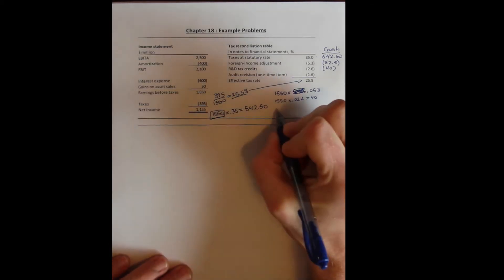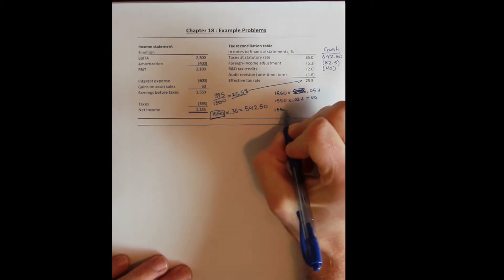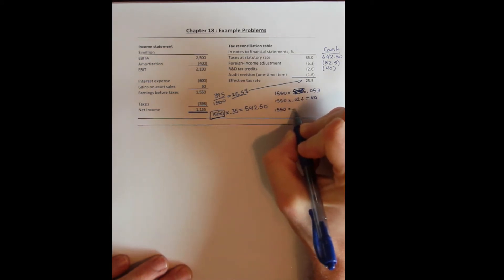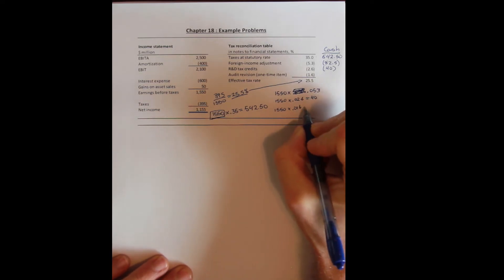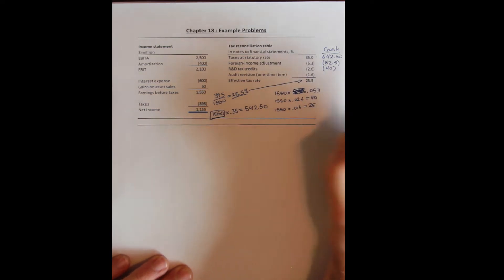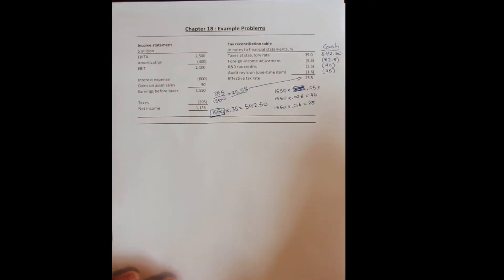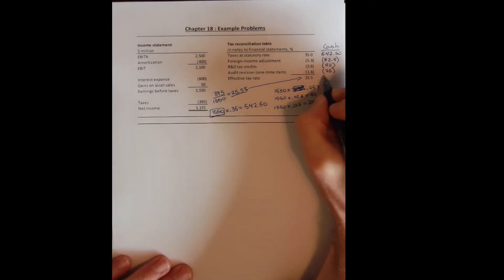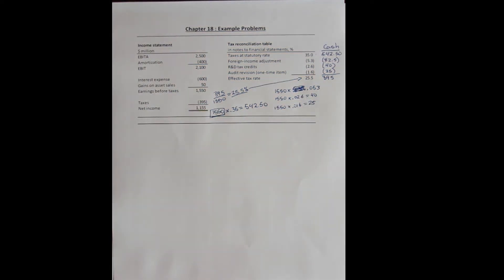They also have an audit revision — a one-time event where their auditors determined they paid too much in taxes, so they filed with the IRS and received a 25 million dollar tax credit. If you subtract all of those cash numbers, you get their effective rate: 395 million. This is how we use the tax reconciliation table to understand how we go from the statutory rate to the effective rate, and to get more detail on what actually happened.